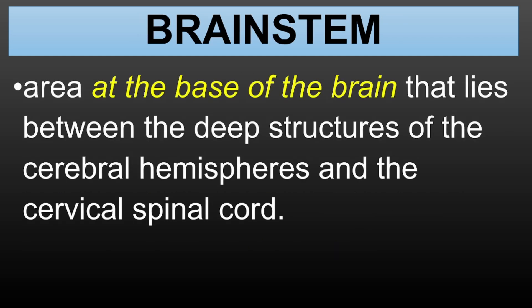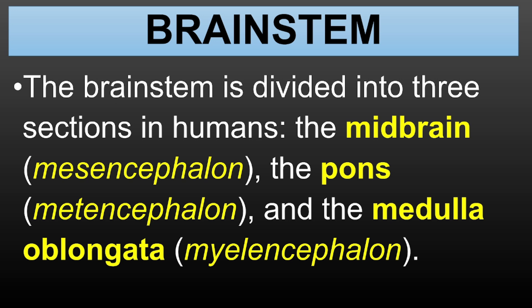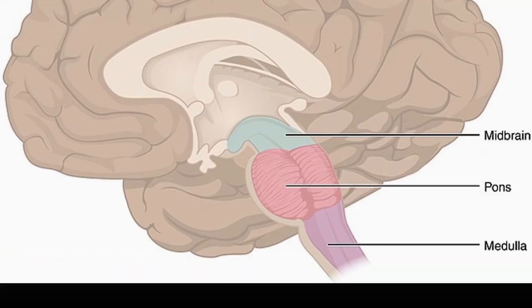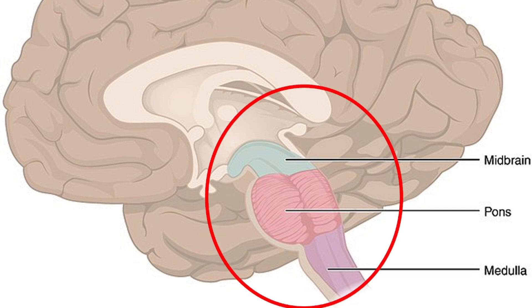The brainstem is the area at the base of the brain that lies between the deep structures of the cerebral hemispheres and the cervical spinal cord, near the cerebellum and underneath the cerebral cortex. The brainstem is vital for controlling basic life functions like breathing, heart rate, and sleep. It's also responsible for controlling reflexes. The brainstem is divided into three parts: the midbrain, pons, and medulla oblongata. At the upper area connected to the cerebrum we have the midbrain, pons is at the center of the brainstem, and directly connected to the spinal cord is the medulla oblongata.